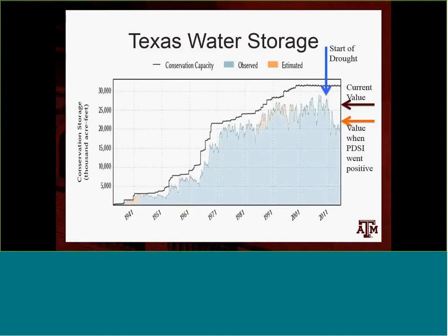Toward the end of the drought, the main impacts were with reservoir levels. Here you can see the history of reservoir levels in Texas. The black line on top is the conservation storage capacity. It indicated the start of the drought in late 2010, took a big dive in 2011, almost recovered, and then was back low again. When the PDSI went positive in March, the orange arrow shows we were still at very low levels compared to the norm. Now we've made up most of that difference — all of that happened in the past two or three months after the PDSI indicated the drought was already over.